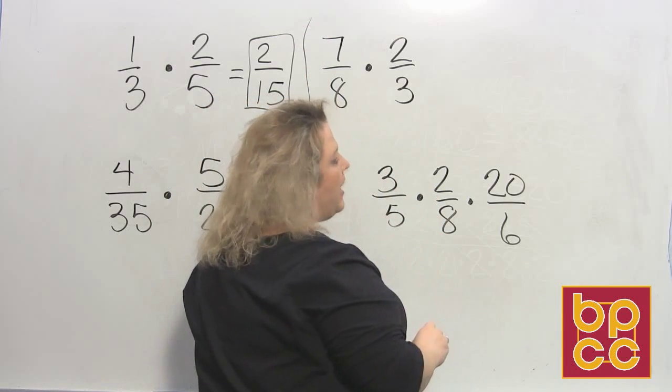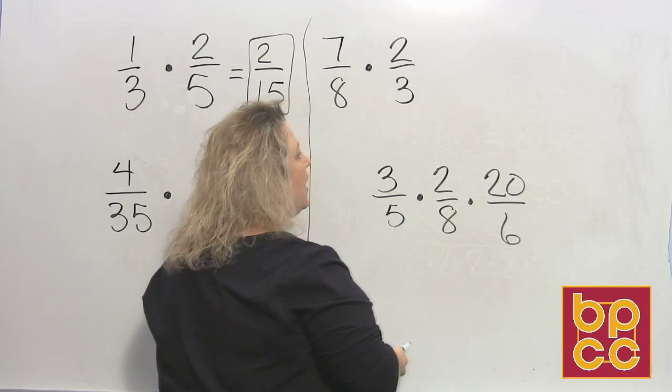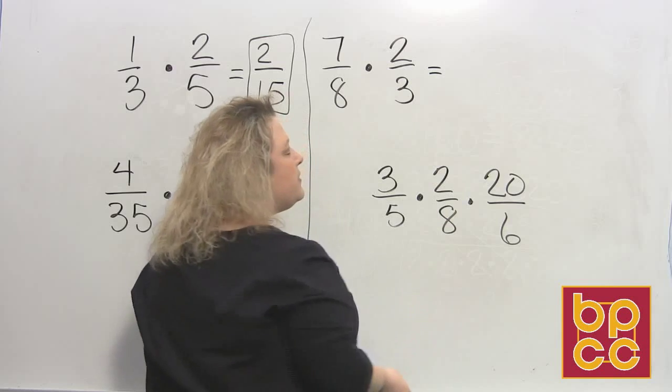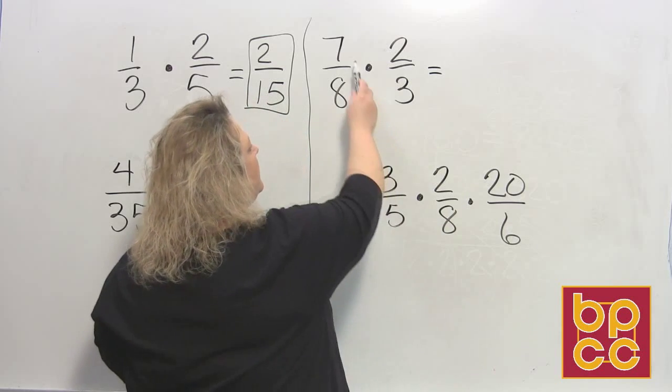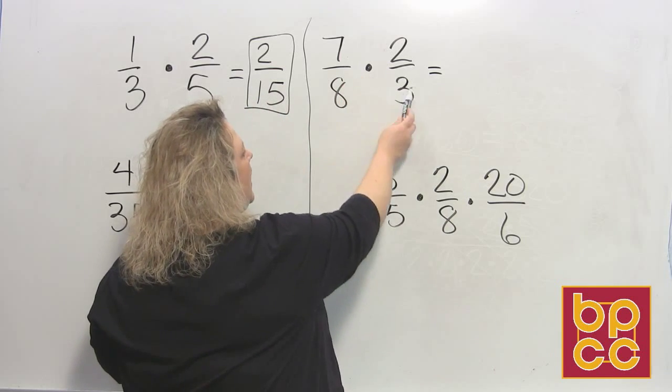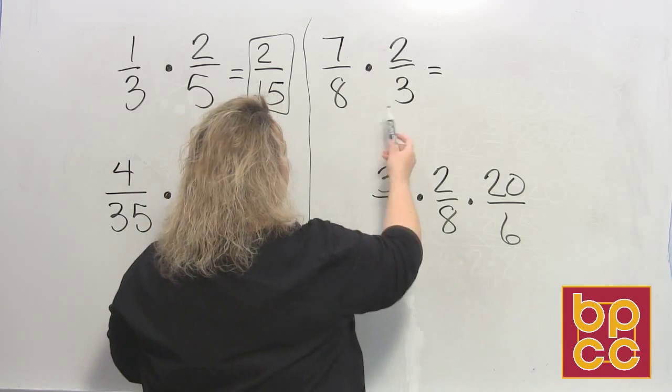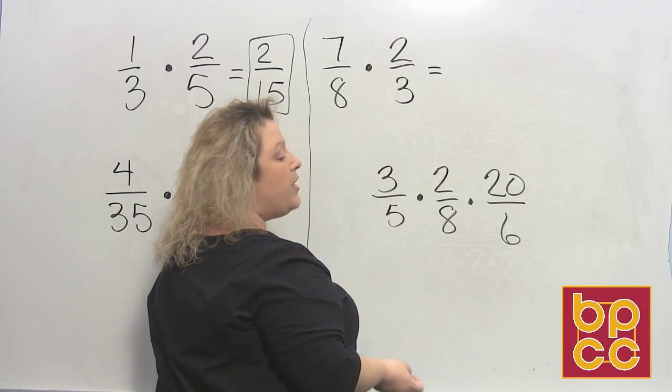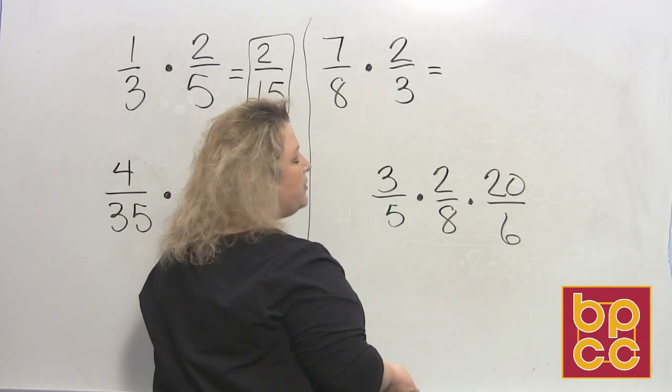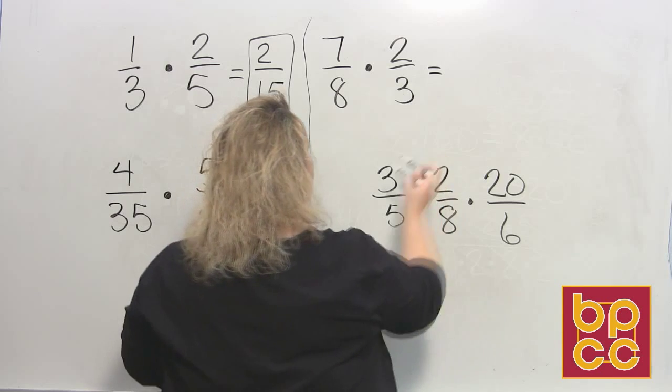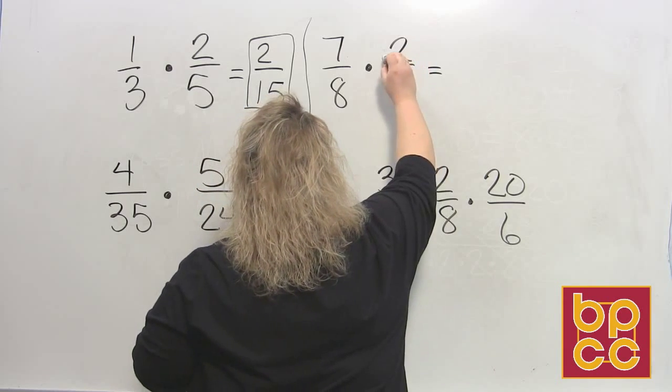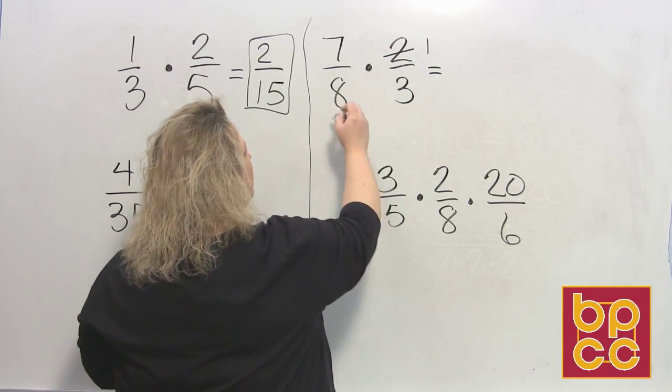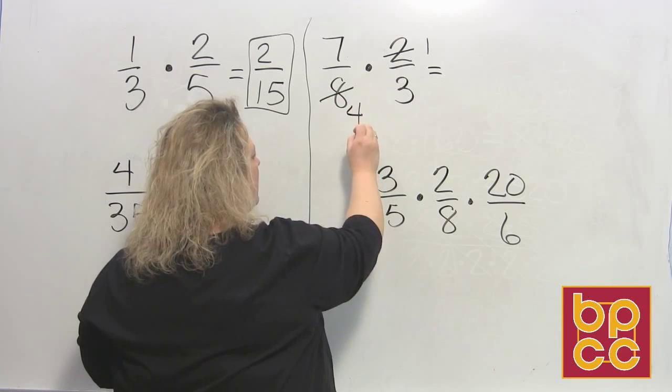I see seven eighths times two thirds. I'm going to look again and say, do they have anything in common? Can I reduce them in any way? Seven and three, I don't see anything that I can reduce with them. I have a two and an eight. I do know that two divides into two and two divides into eight, so I can reduce those. Two divides into two one time, so cross that out and put a one. Two divides into eight four times, so cross that out and put a four.